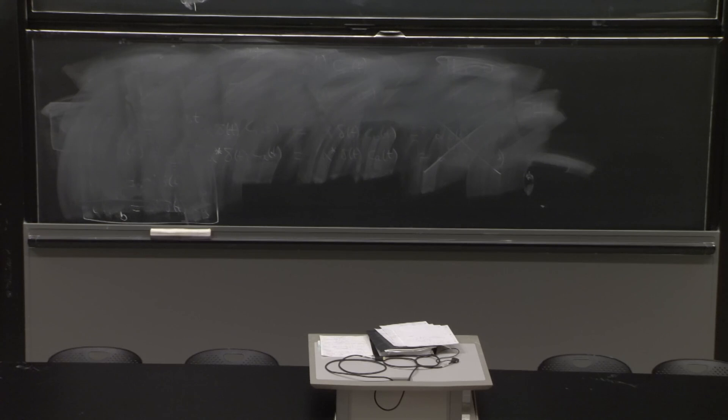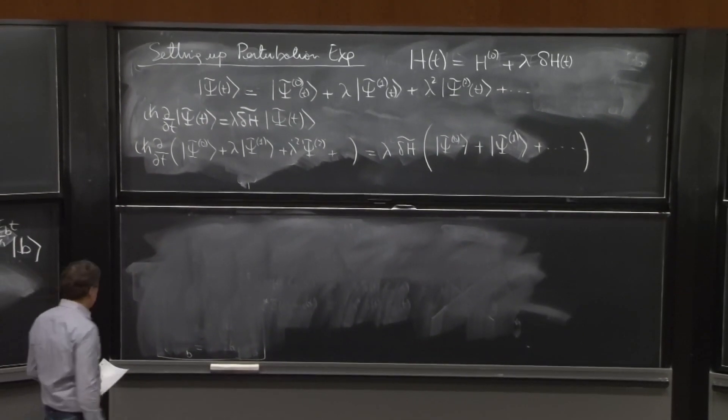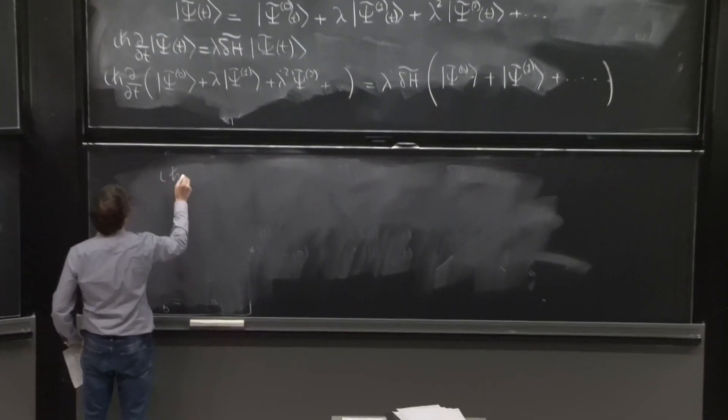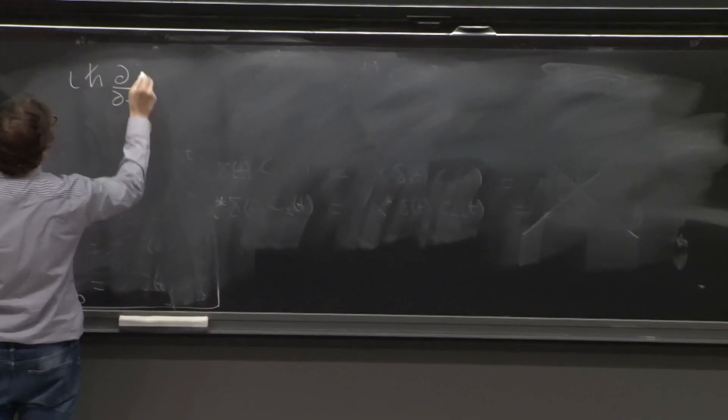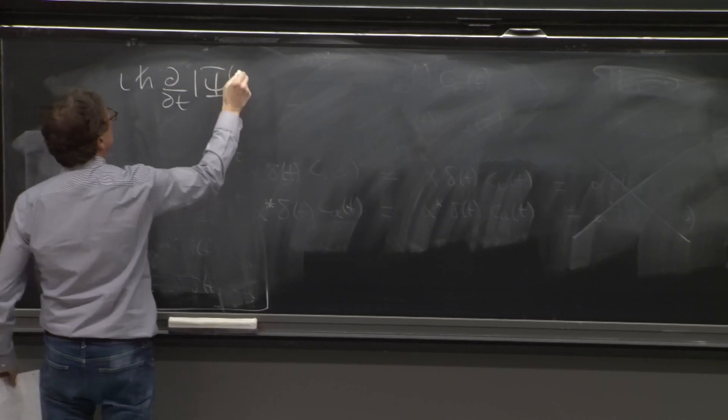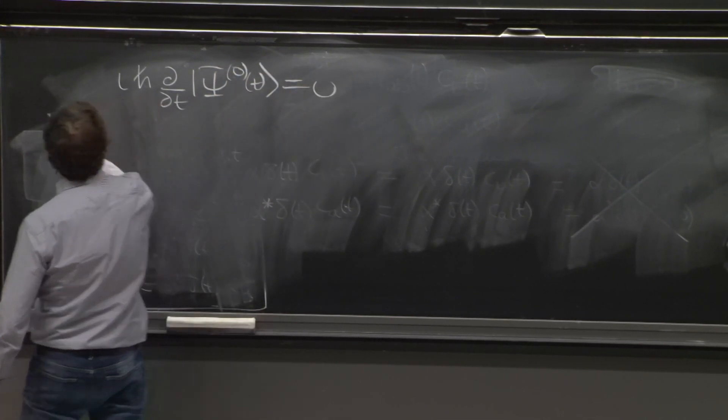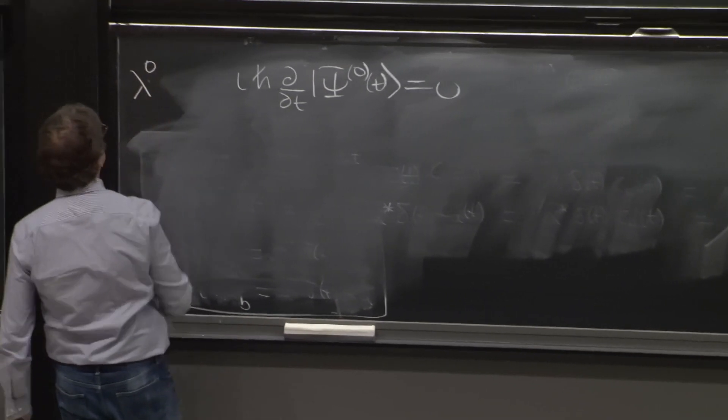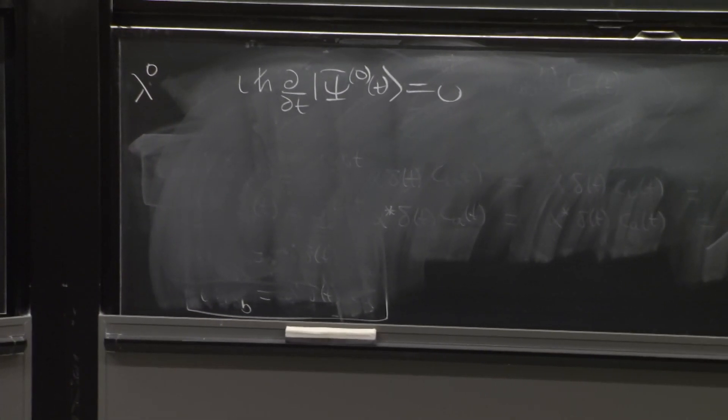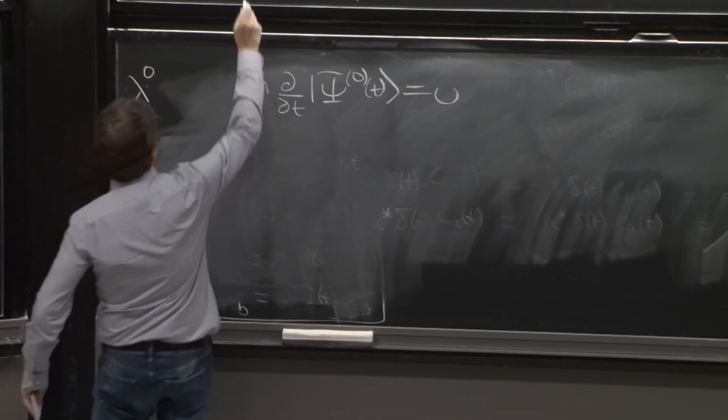So what do we get? Terms without lambda, i h bar d dt of psi tilde 0 of t equals 0. This is lambda to the 0. That's the only term without the lambda, the one that arises here.